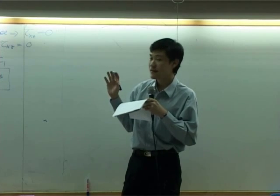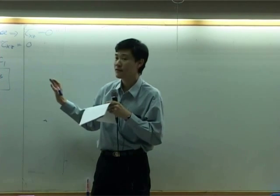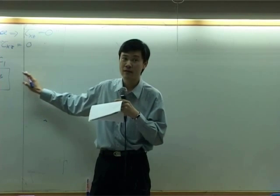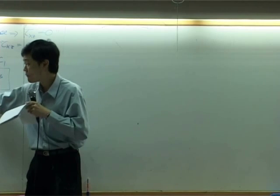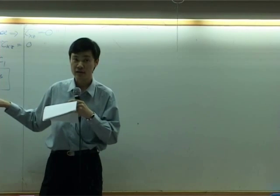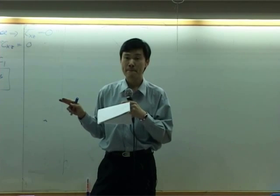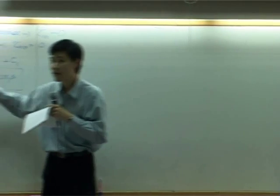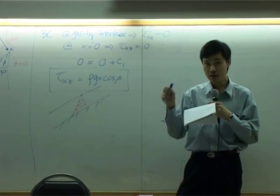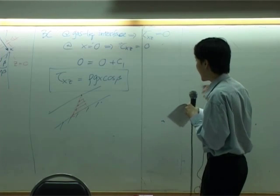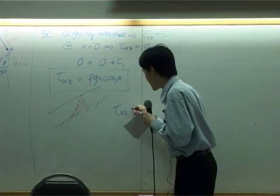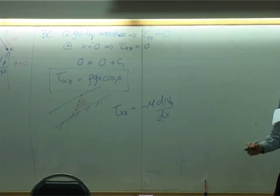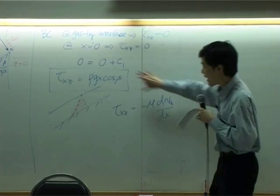Now, once you obtain the shear stress profile, this one is not the end. Because we do not want shear stress profile. We want velocity profile. So you need to convert shear stress into velocity. How can we do that? What is the equation relating to tau and v? Newton's law. There is only one. And we already determined earlier that tau xz is minus mu dvz by dx. This has been found from last class.